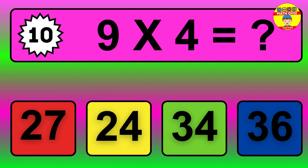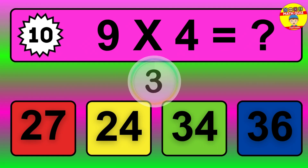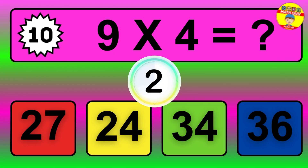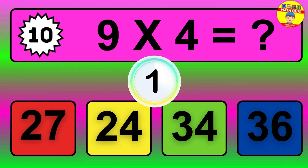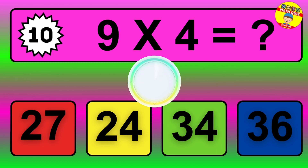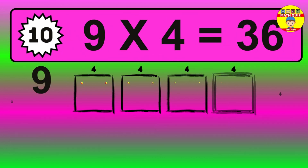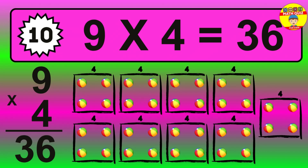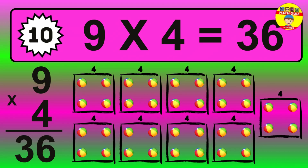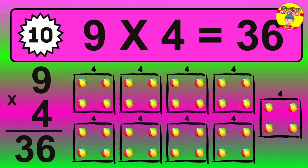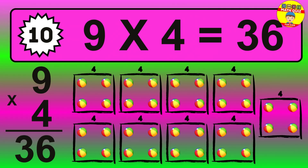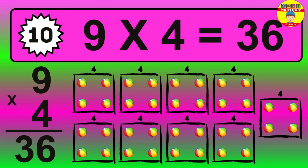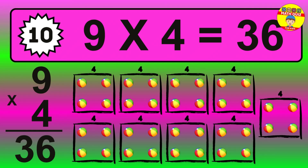Question 10. 9 times 4 equals what? The answer is 9 times 4 is 36. To calculate, we have 9 groups with 4 balls each one. So, how many balls do we have? 36 balls.